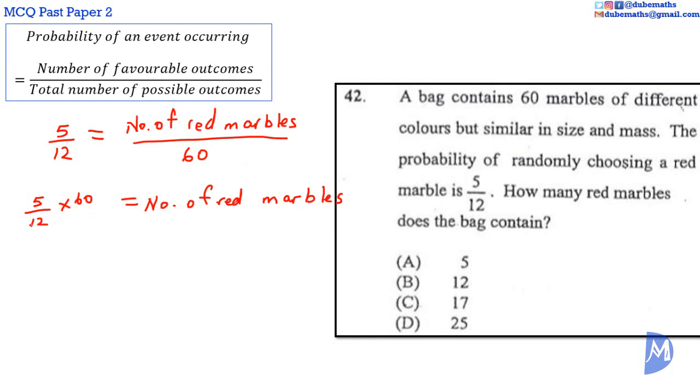Canceling. 12 into 12, 1. 12 into 60, 5. 5 multiplied by 5 is equal to 25. The number of red marbles is equal to 25. The answer is D.